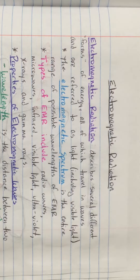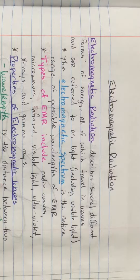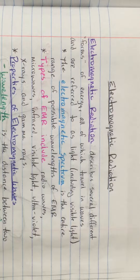The electromagnetic spectrum organizes all of the different possible wavelengths of electromagnetic radiation. Electromagnetic radiation includes things like radio waves, microwaves, infrared light, visible light, ultraviolet light, x-rays, and gamma rays.